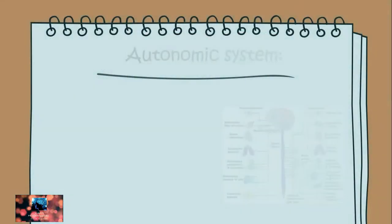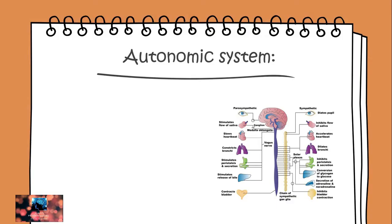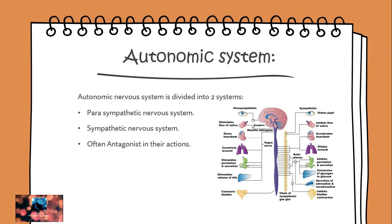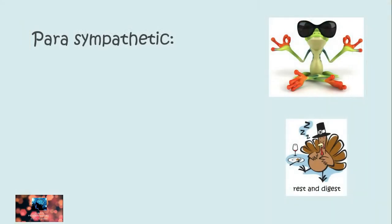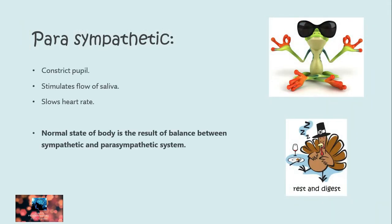The Autonomic Nervous System has two sub-divisions: the Parasympathetic and Sympathetic Nervous System. If we talk about the Parasympathetic Nervous System, then your pupils constrict, heart beat slows down, and it stimulates the flow of saliva in your mouth.